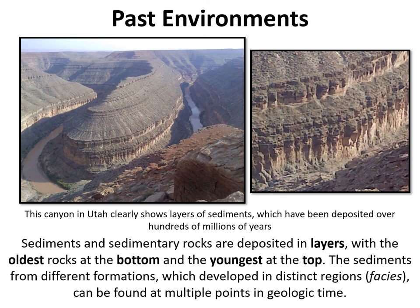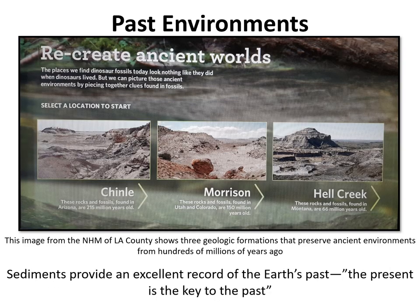Formations can be further dated using their fossil material — geologists have used fossils as waypoints in geologic time for hundreds of years. On this exhibit from the Natural History Museum in Los Angeles County, three formations are shown in order from oldest to youngest: the Chinle Formation (Triassic period), the Morrison Formation (Jurassic period), and the Hell Creek Formation (Cretaceous period). All three come from the Mesozoic era — the time of dinosaurs — and each represents a distinct span of geologic time with distinct fossils within each period.